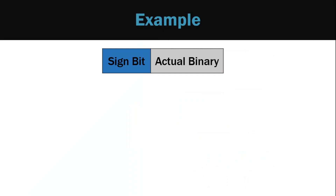Now some examples of signed magnitude form. For plus 7, the number is positive so the sign bit is 0. Now 7 is equivalent to binary number 111. So plus 7 will be represented as 0111 in sign magnitude form.